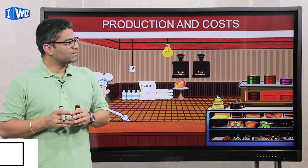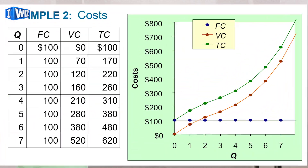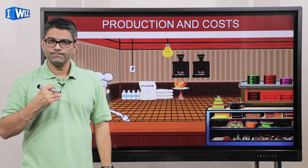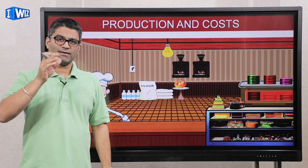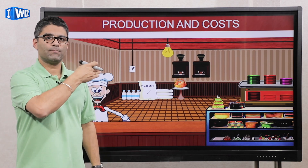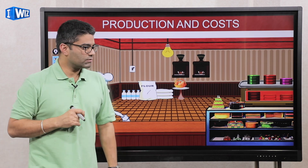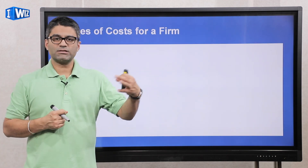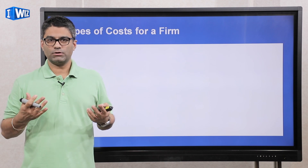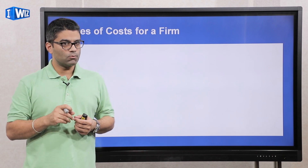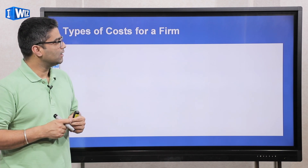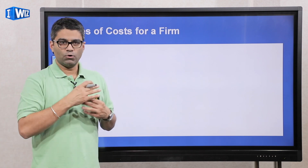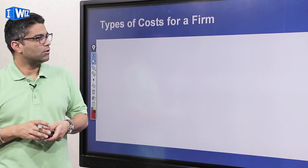It's important to note that fixed cost is always horizontal — it's a fixed number. Variable cost goes up, and total cost, which is a combination of the two, takes the same shape as variable cost but starts at a higher point. Make sure you're very comfortable with all of those concepts. Today we're going to take a step forward and look at averages and marginal costs — analyzing costs in a little more detail. In the next video we'll graph it and hopefully put everything together.